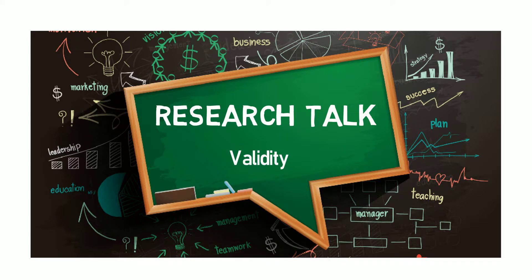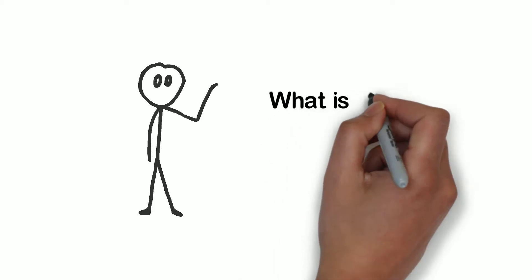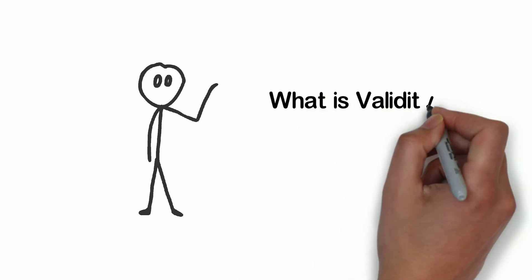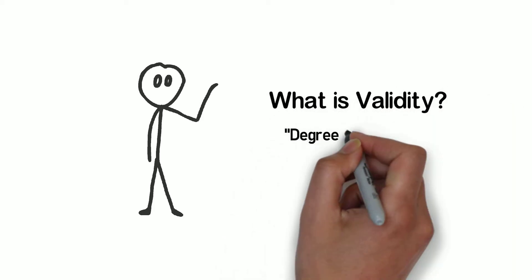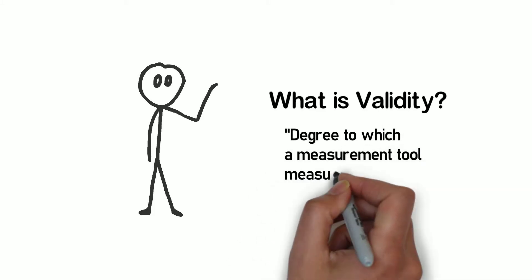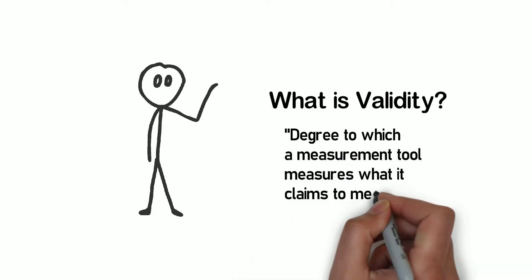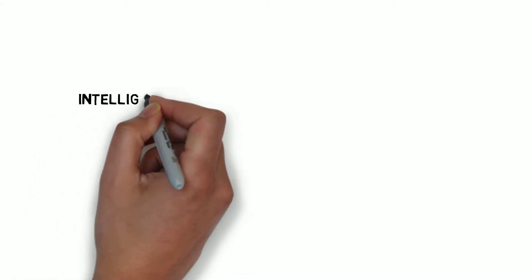Welcome to Research Talk, where we talk about research. In our last video we talked about reliability, and today I'll be talking about validity. So what is validity in research? The term validity refers to the degree to which a measurement tool measures what it claims to measure. For example, let's say there is a test that claims it measures intelligence.